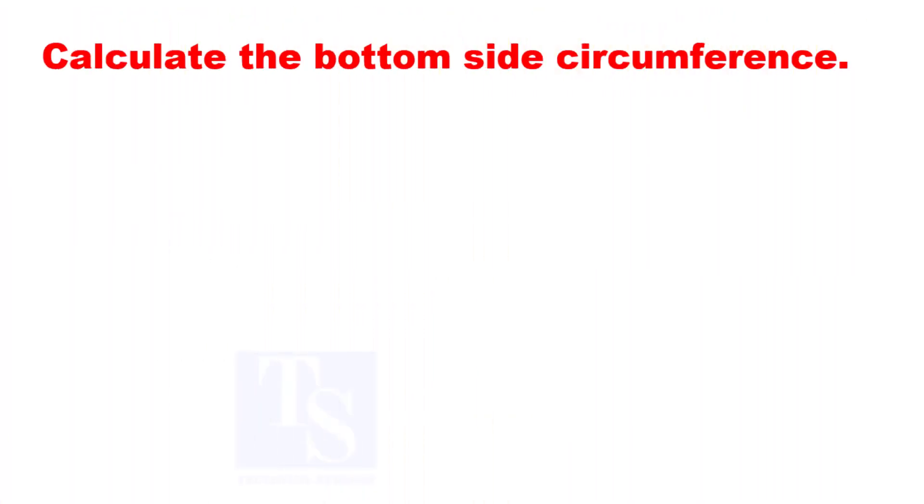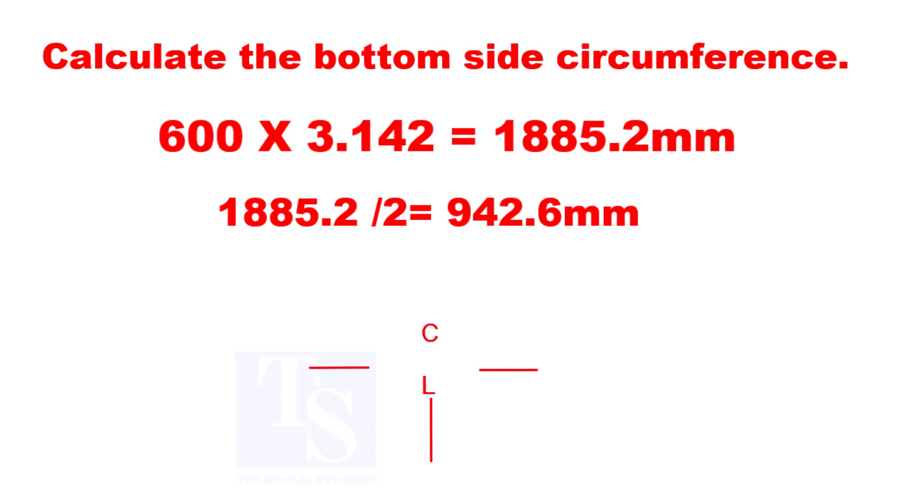Let us calculate the bottom side mean diameter circumference and divide the circumference by 2 and mark the length on both sides. If required, you can mark the full length to one side.